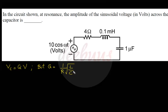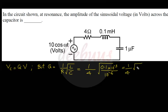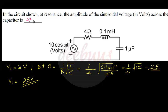Substituting values: R = 4 Ω, L = 0.1 mH = 0.1 × 10⁻³, C = 10⁻⁶. So Q = (1/4) × √(0.1×10⁻³ / 10⁻⁶) = (1/4) × √100 = (1/4) × 10 = 2.5. The quality factor is 2.5.